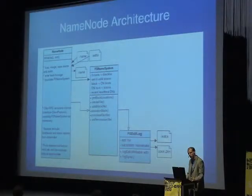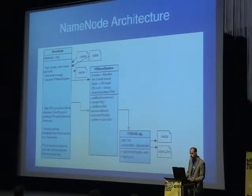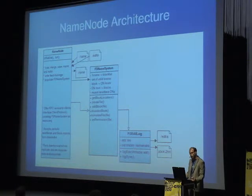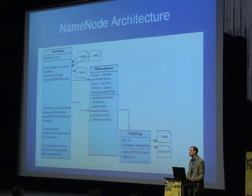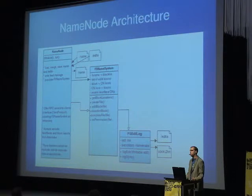On startup, the first time you start a name node you'll get 'file system not formatted.' You run format and start again. It loads the FS image, merges in the edit logs, writes a fresh image, and populates the FS name system in memory. Then data nodes — started via bash scripting at the same time — connect to it, check in, and send over their block lists. The name node will generally be in safe mode until enough data nodes have connected and sent block reports, showing it has data nodes for the vast majority of blocks it expects to have.